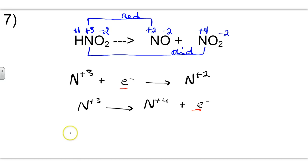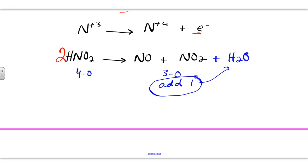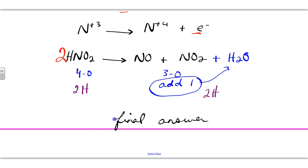With balanced electrons, the reaction stays as HNO₂ yields NO plus NO₂. Checking masses: one nitrogen on the left but two on the right, so we place a coefficient of two in front of HNO₂. Two nitrogens on each side. Balancing oxygens: two times two gives four on the left; three on the right — we need one more, so we add one water on the right. Checking hydrogens: two on the left, two on the right — already balanced. Our final answer is 2HNO₂ yields NO plus NO₂ plus H₂O.